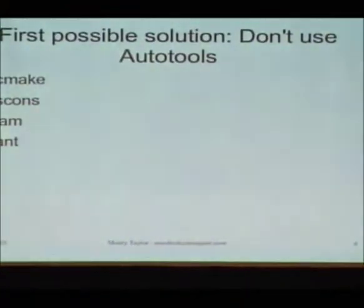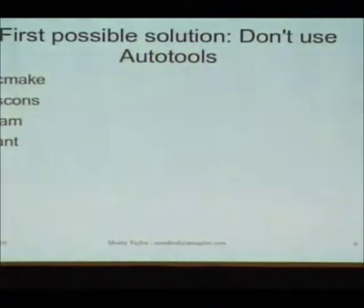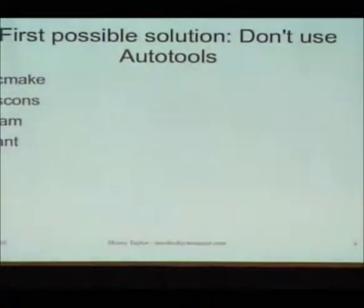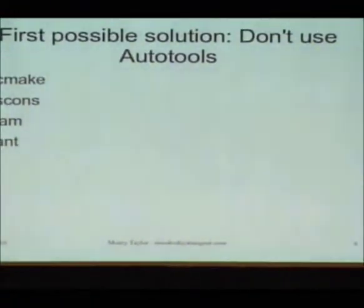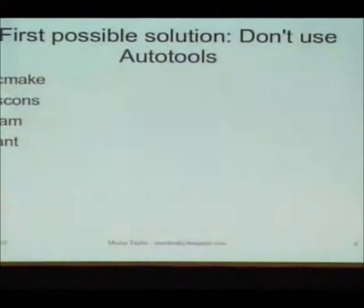SCons is a Python-based thing — it's weird. Jam: if anybody's ever pulled down the boost source code, it has its own build system called Jam, which is actually a reimplementation of another system called Jam. And then there's Ant — if there's any Java people, of course you use Ant. It has extensions for building C and C++ stuff. They don't work and they're really weird. Also XML: for anybody thinking about designing a new build system, please don't use XML as the basis of it.